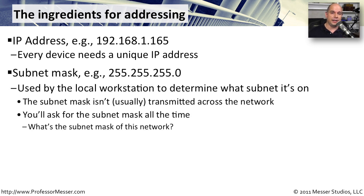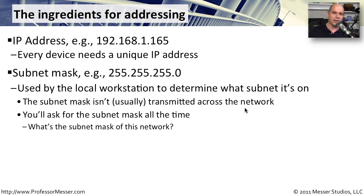Another piece of information you must assign to a machine you're configuring is the subnet mask — for example, 255.255.255.0. This is a set of numbers that helps your computer determine what subnet it belongs to. It uses this information when sending data on the network to decide: should I send this to a device on my local subnet, or pass it off to a router because it's on a separate subnet? The subnet mask is used locally and is always paired with the IP address.